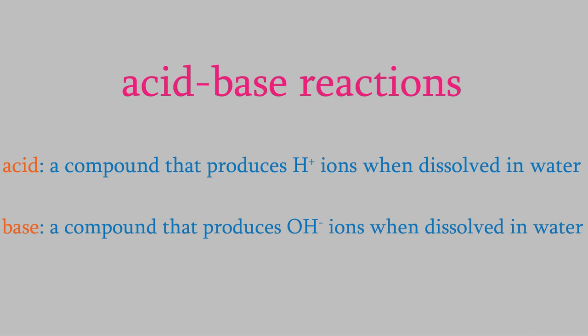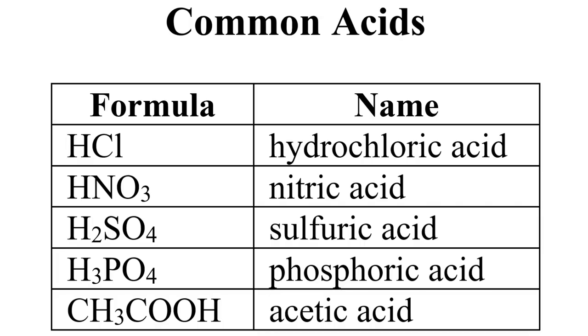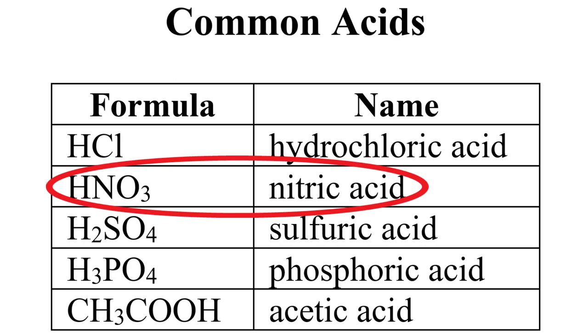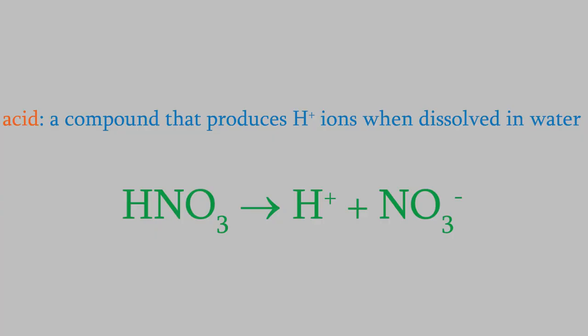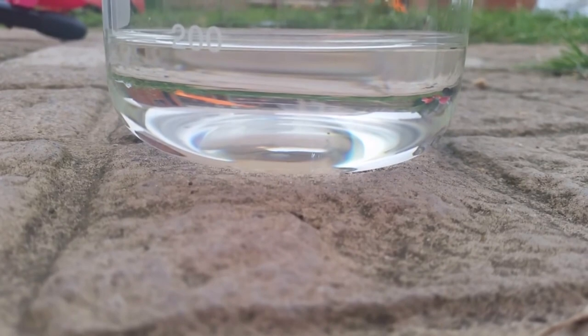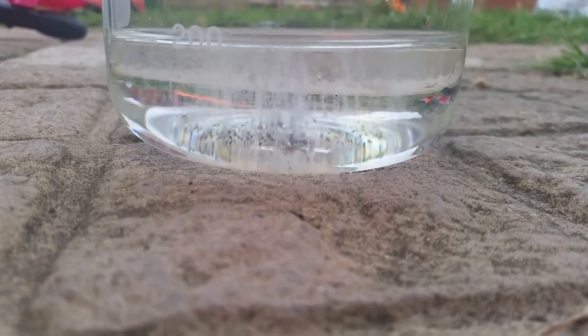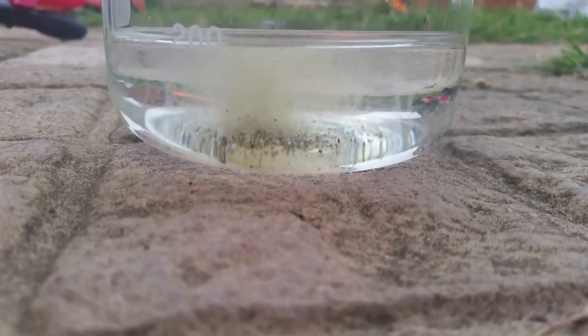This isn't a very good definition, and you'll learn a better one during the second semester. The definition I gave does describe all the acids from the fifth video. For example, one common acid is nitric acid. If you have nitric acid molecules in water, the molecules dissociate to produce H+ ions and nitrate ions. That's what makes nitric acid an acid — it produces H+ ions in water. Most people know that acids are corrosive, because H+ ions are very reactive.